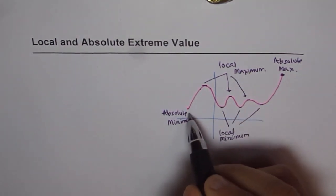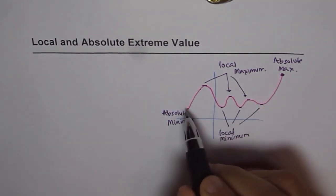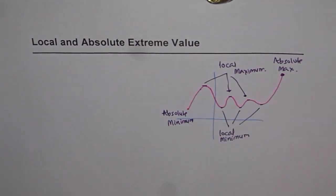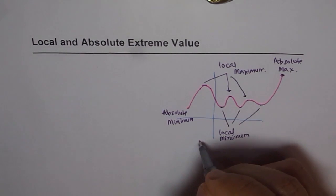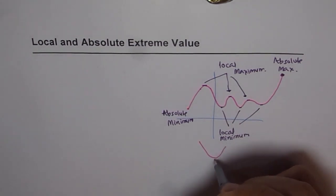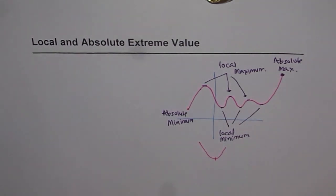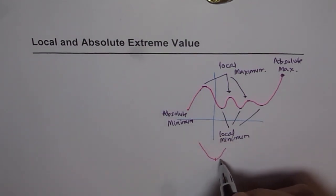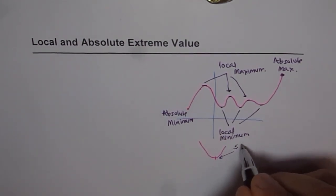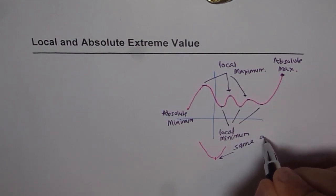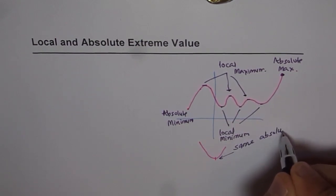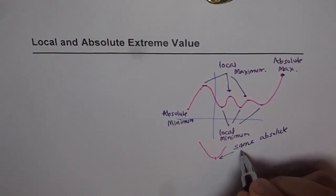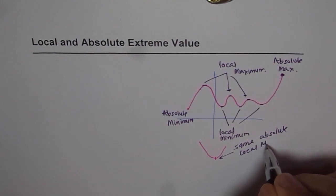It is not necessary to have the absolute maximum or minimum at the endpoints — it could be at the center also. Consider a parabola, for example: it can have both the absolute minimum and the local minimum at the same point. So there is a possibility of both being the same.